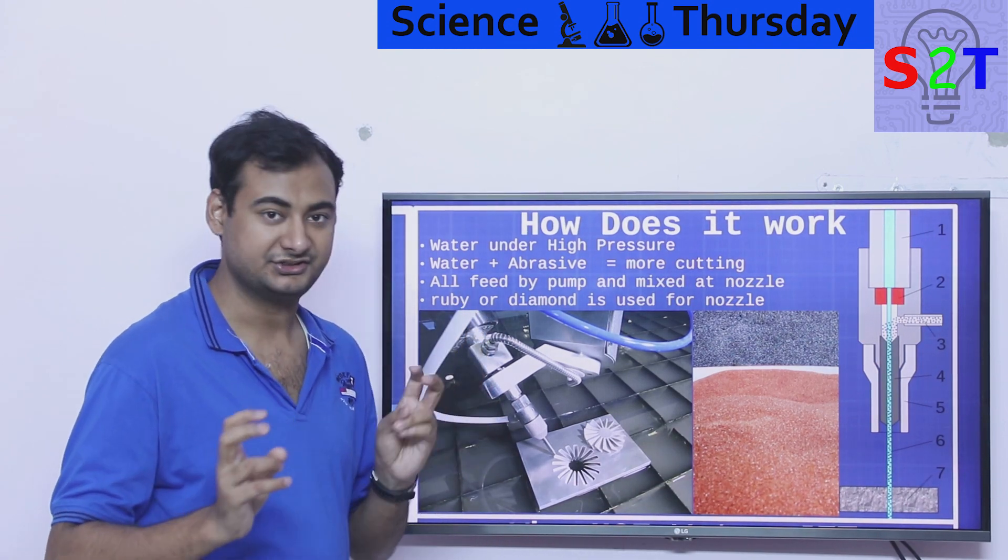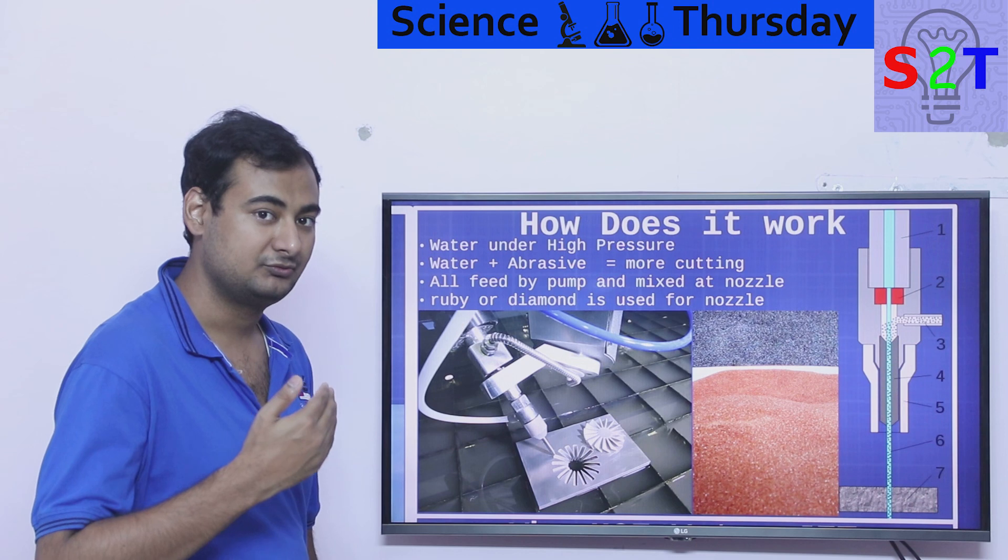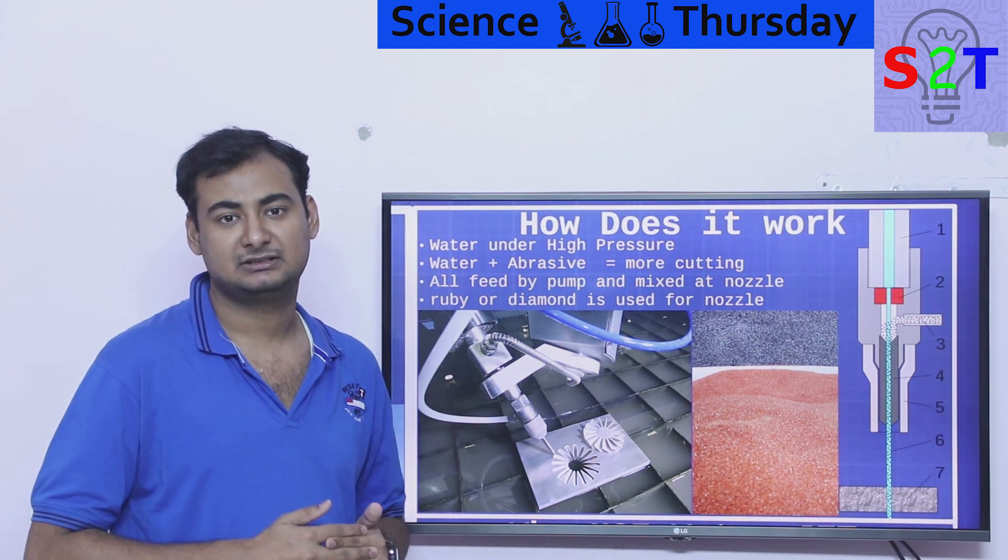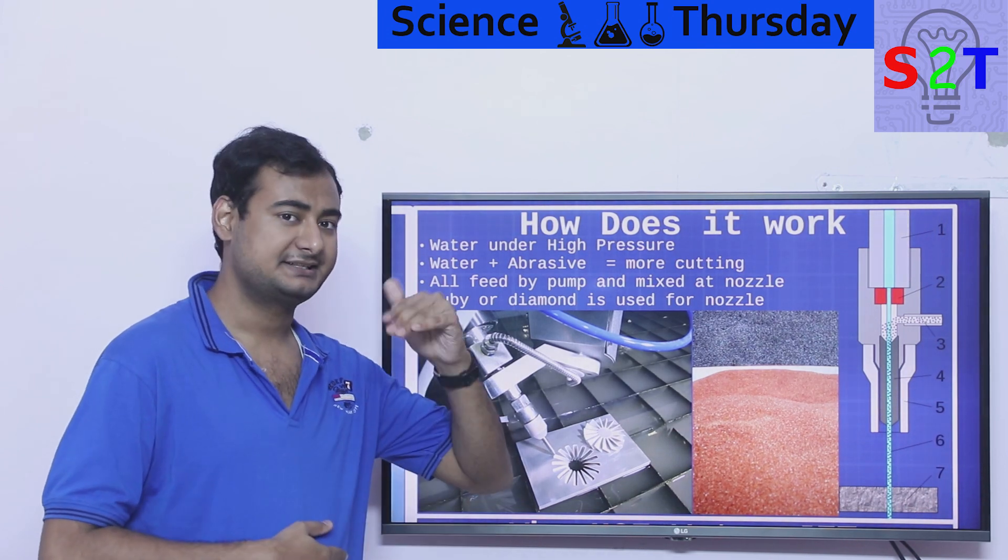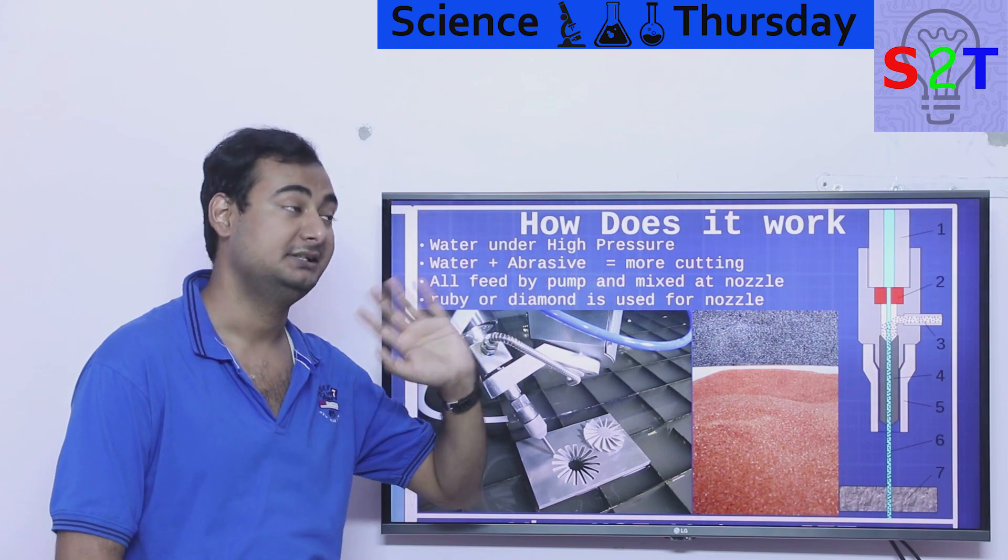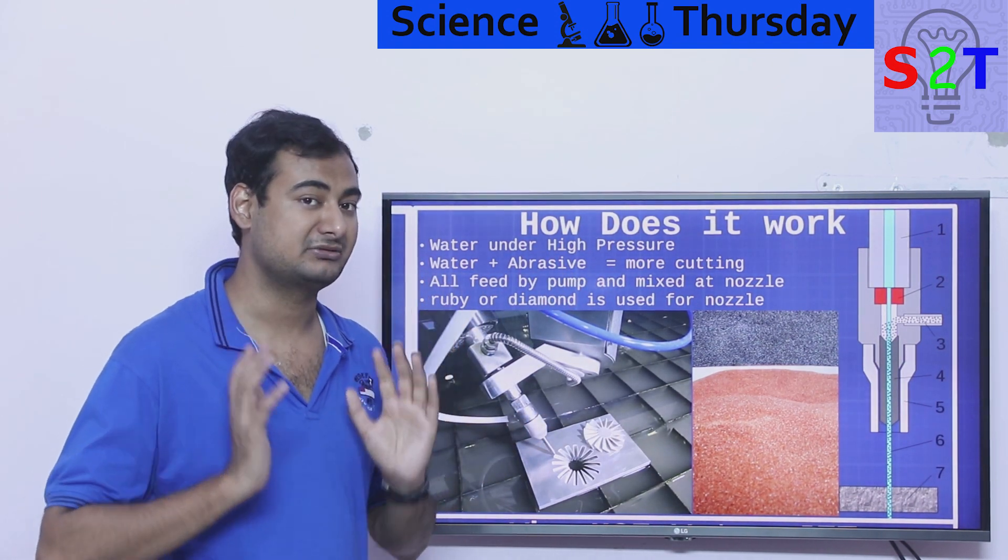So how does this water jet cutter work? Well we take water and we pressurize it. Now generally we measure pressure in psi. So in this scenario psi can go as low as 600, as high as 40,000 to even 60,000 to 90,000 psi. It's ludicrous. So we put water under tremendous pressure.